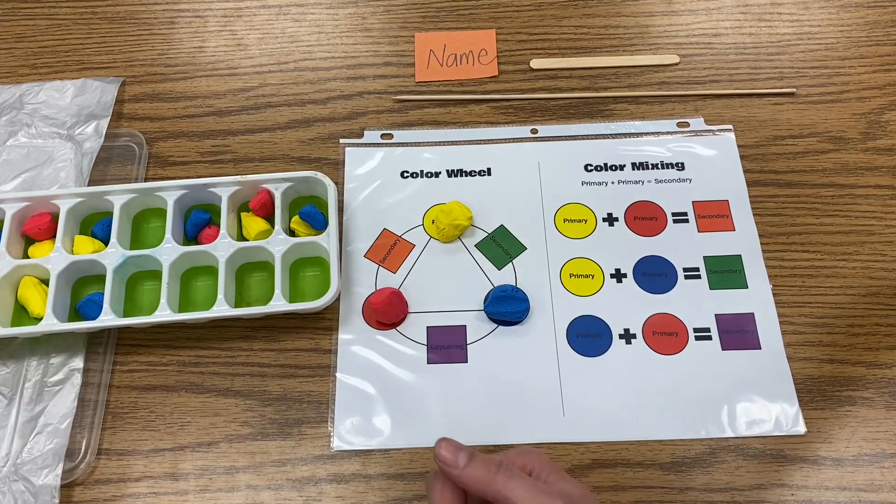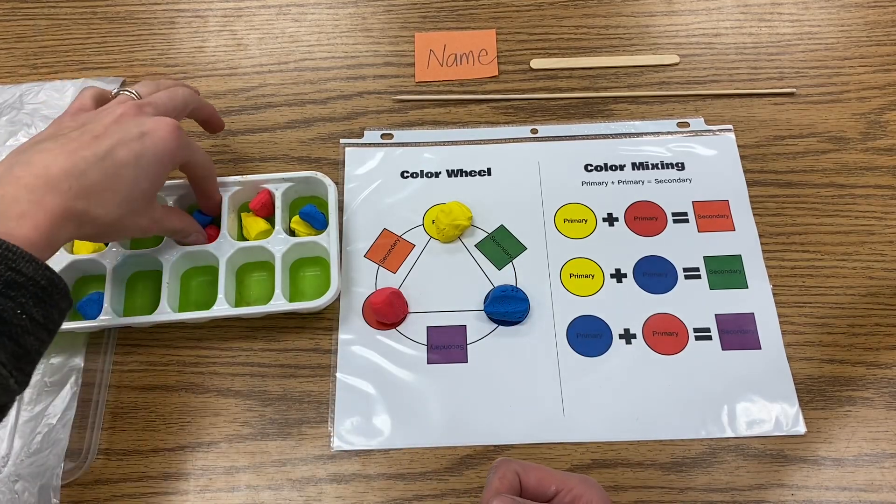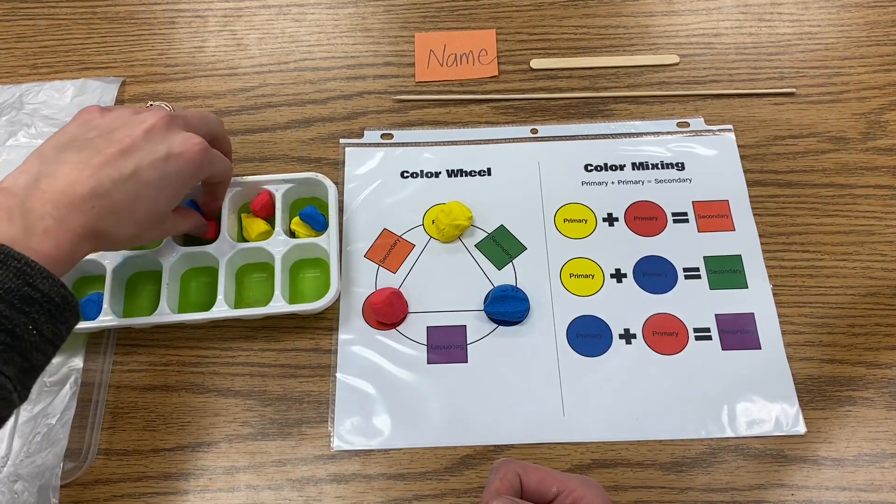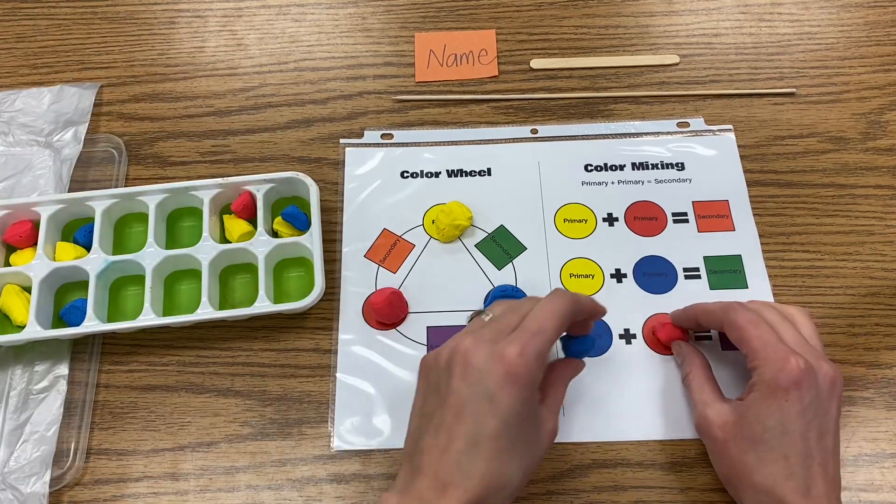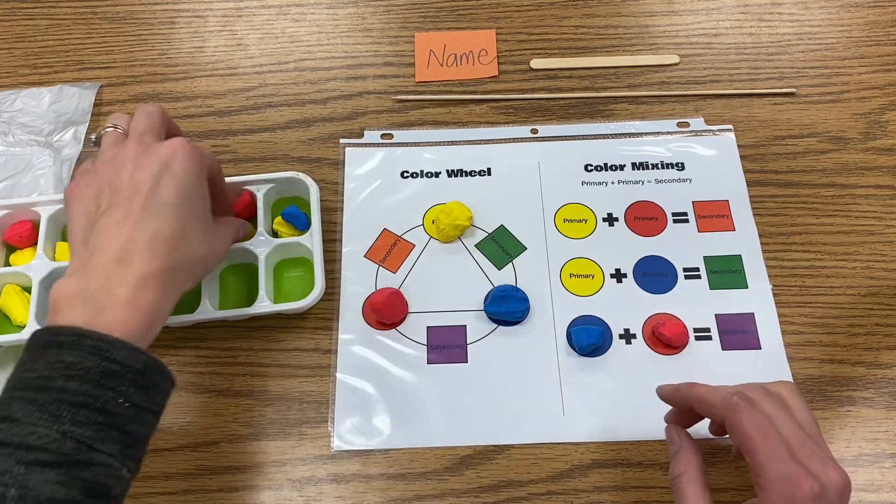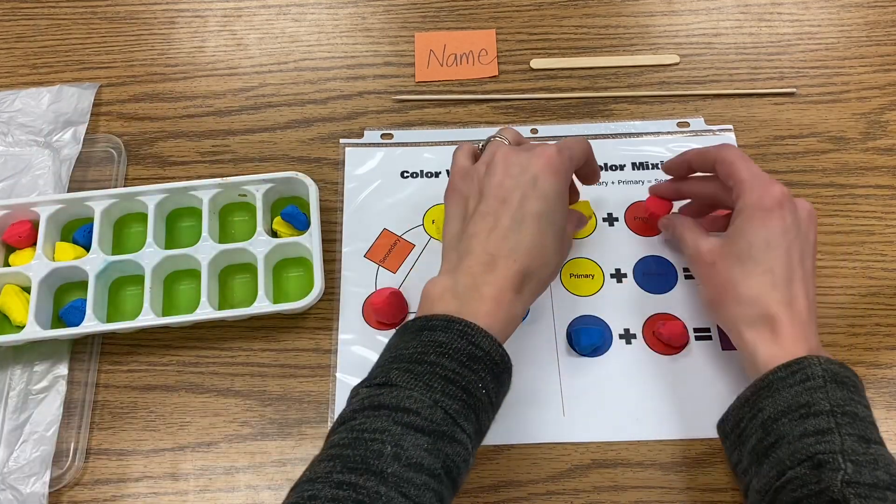So I've taken out my primary colors. Now you might notice that we don't actually have any secondary colors, we just have primaries. So these smaller pieces I'm going to take and put over here on our equations. I'll put the red and the blue, and I will put my yellow and red.